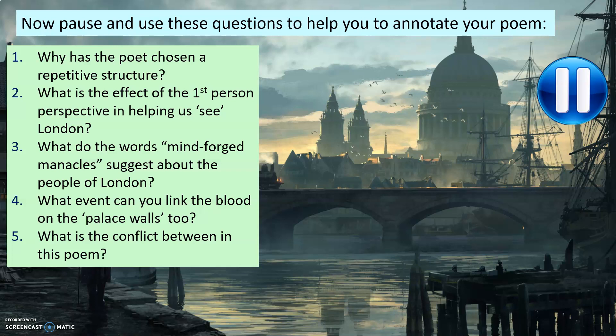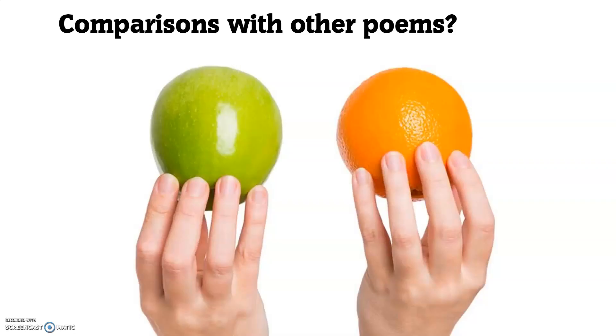There are questions to pause and consider — I won't have time to read through all of them, but they point you towards bits of the poem to annotate and add to your notes. You could answer them, or use them to help write more in your notes. Particularly think about: what is the conflict in this poem? I'll leave you to think about that one and move on to talk about comparisons with other poems.